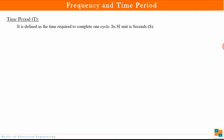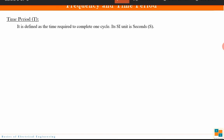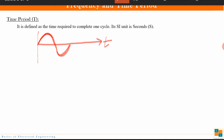What do we mean by one cycle? On a sine wave which is AC, this part is the positive half and this part is the negative half. One positive half and one negative half together make one cycle. The time required to complete this one cycle gives you the time period.